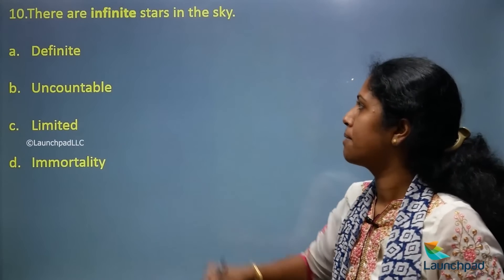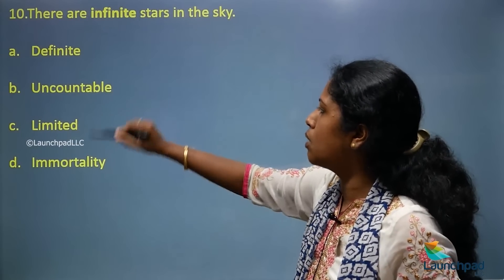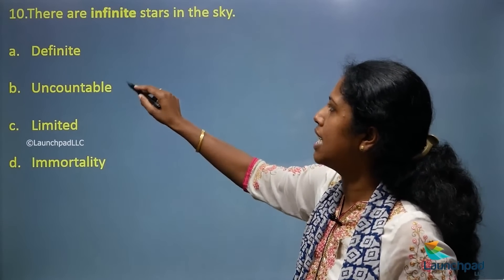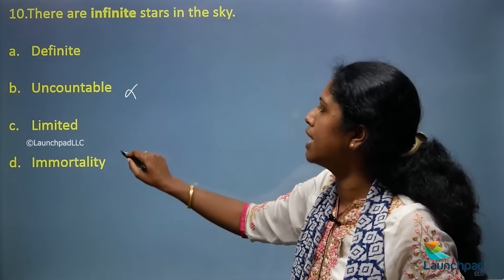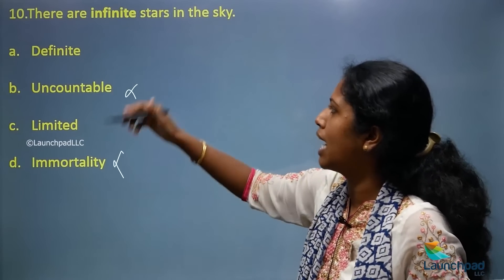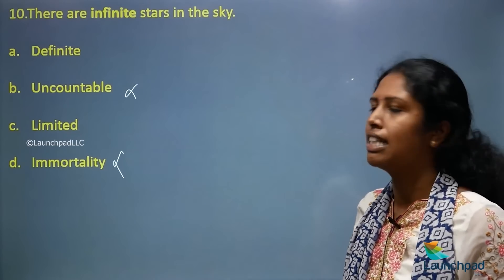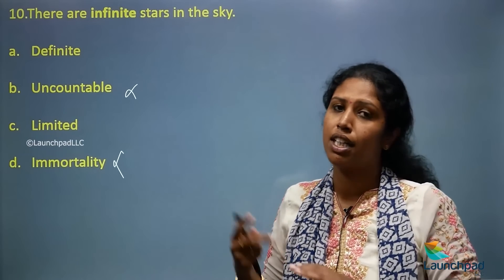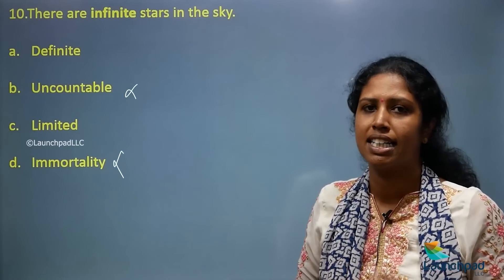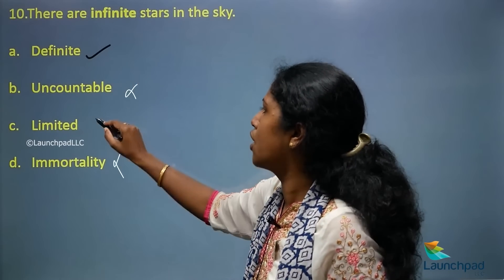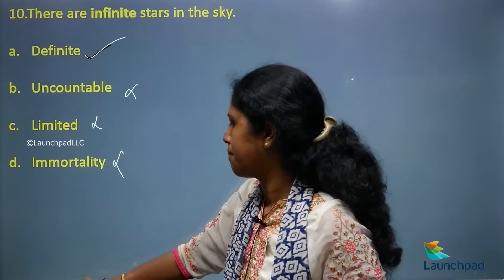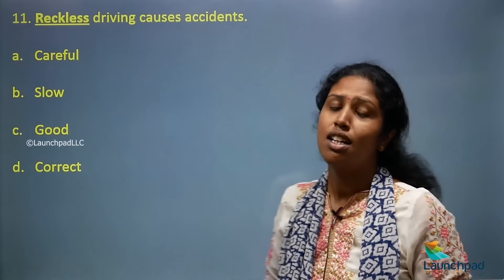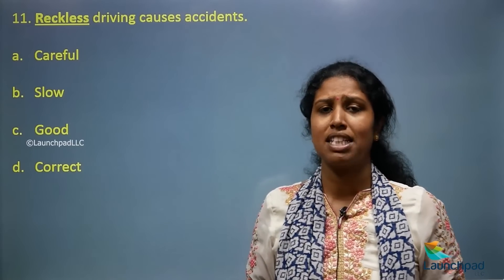Next question: 'There are infinite stars in the sky.' Infinite means uncountable. What is the opposite? Options: definite, uncountable, limited, immortality. 'Immortality' and 'uncountable' are not right. We have 'definite' and 'limited.' Limited means there is a certain limit, but the exact opposite of infinite is 'definite.' So your answer is definite.